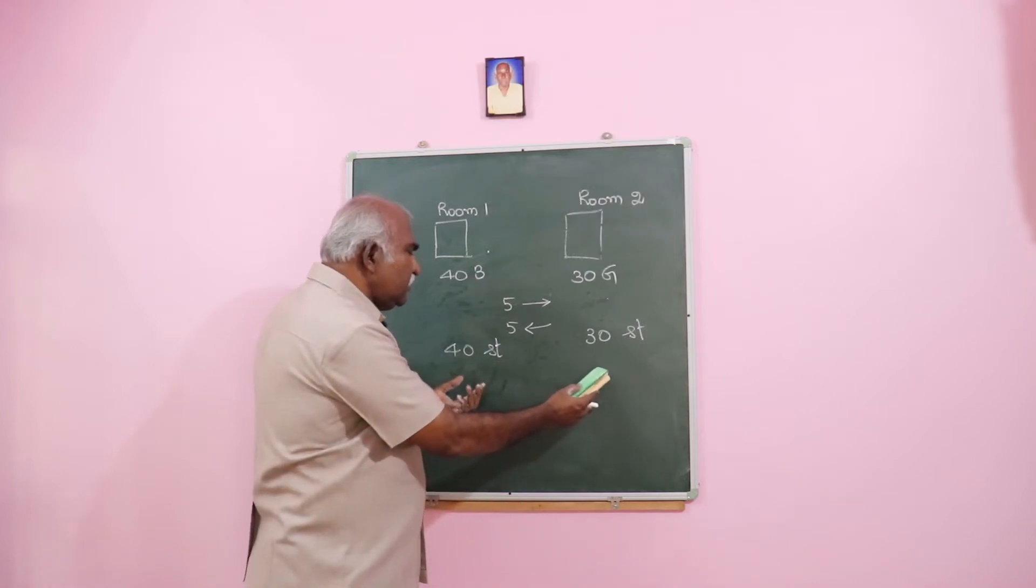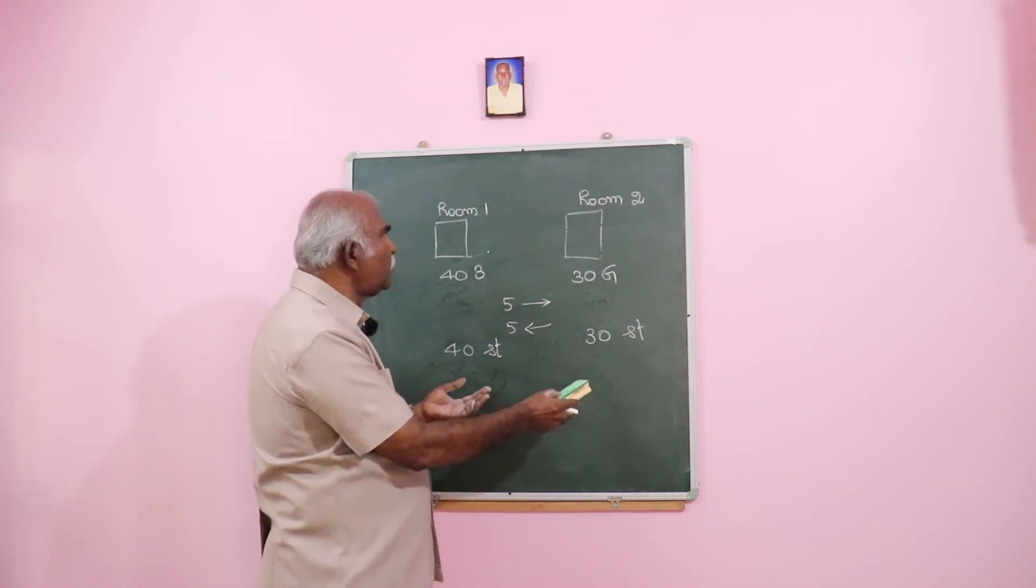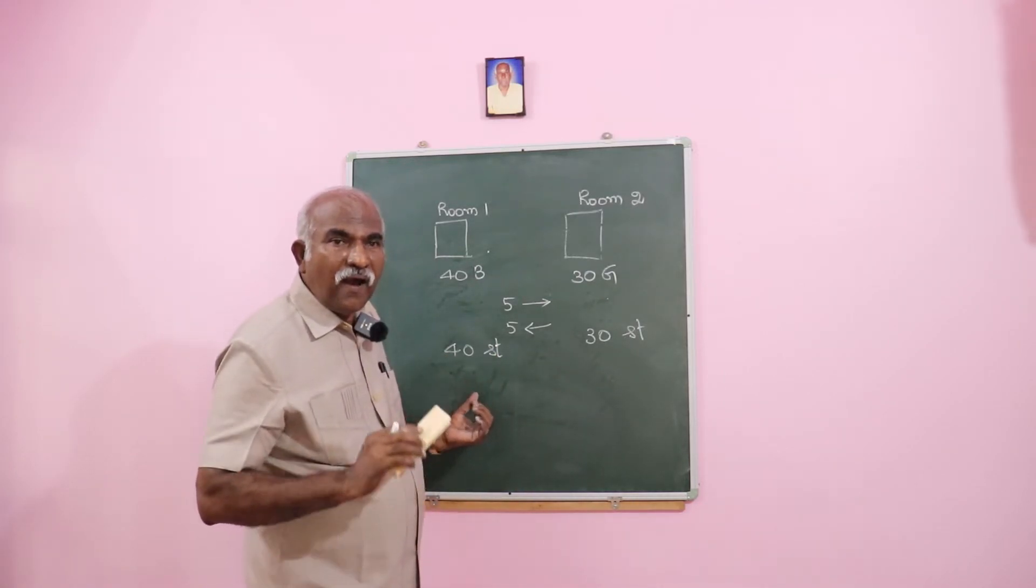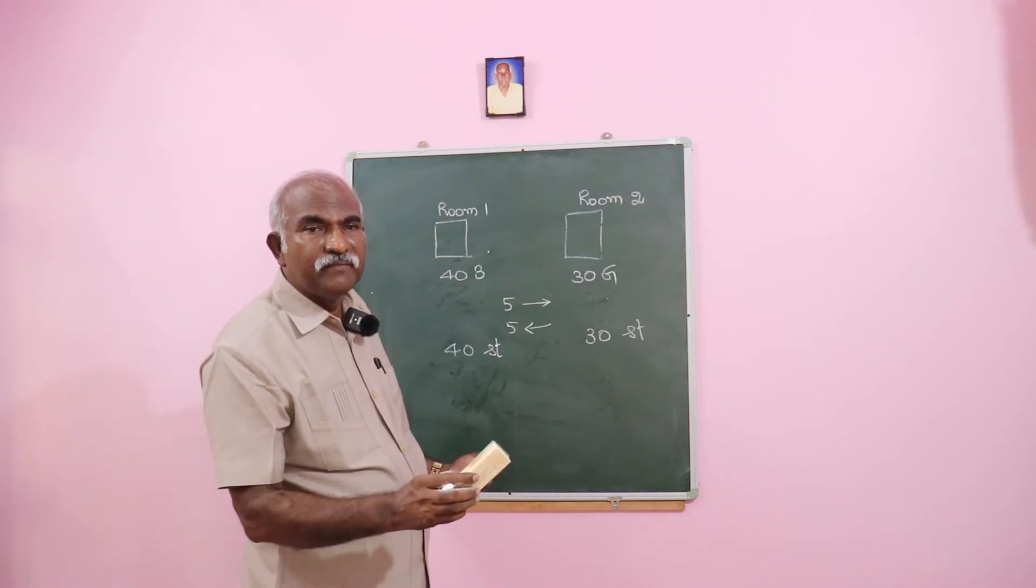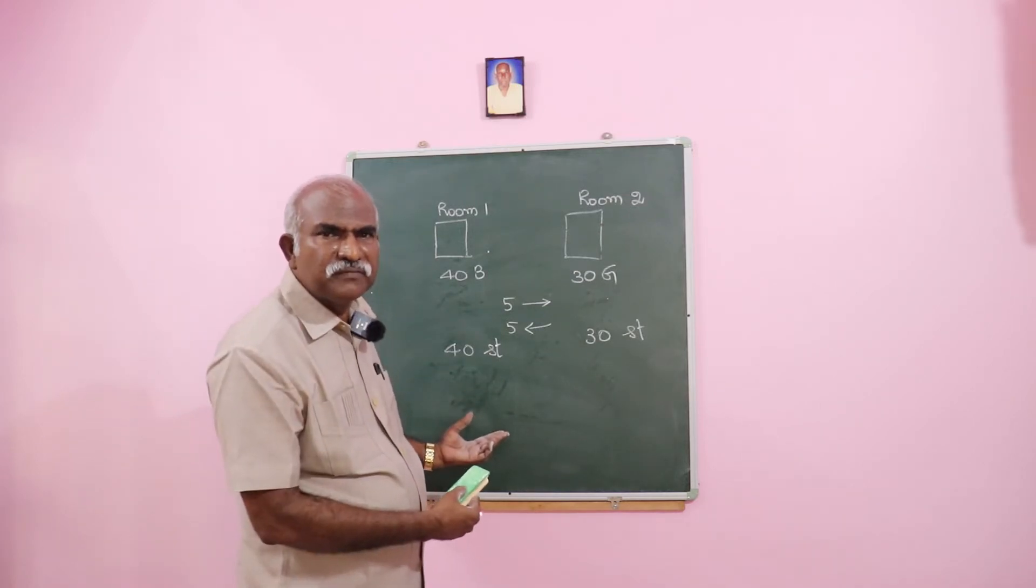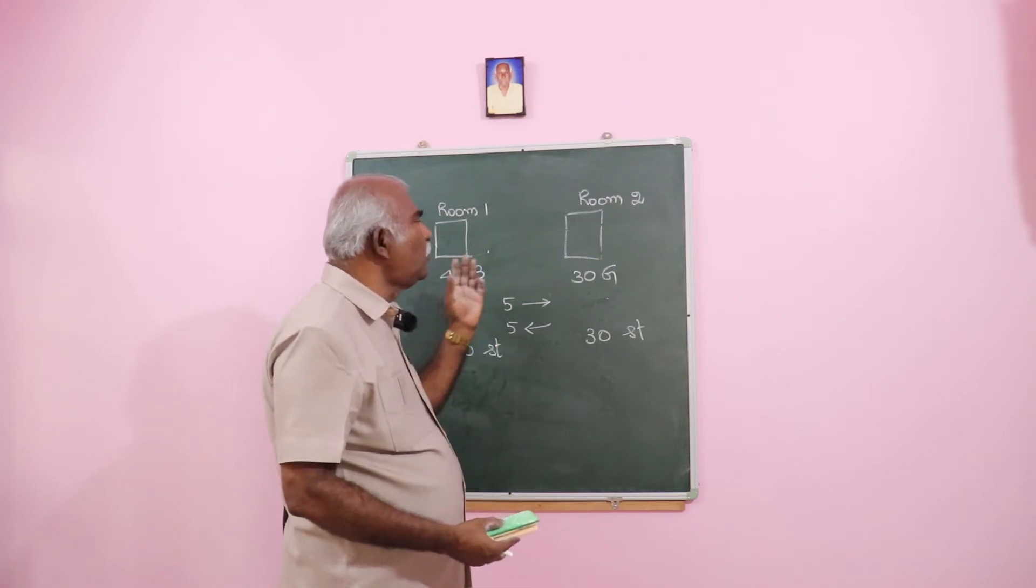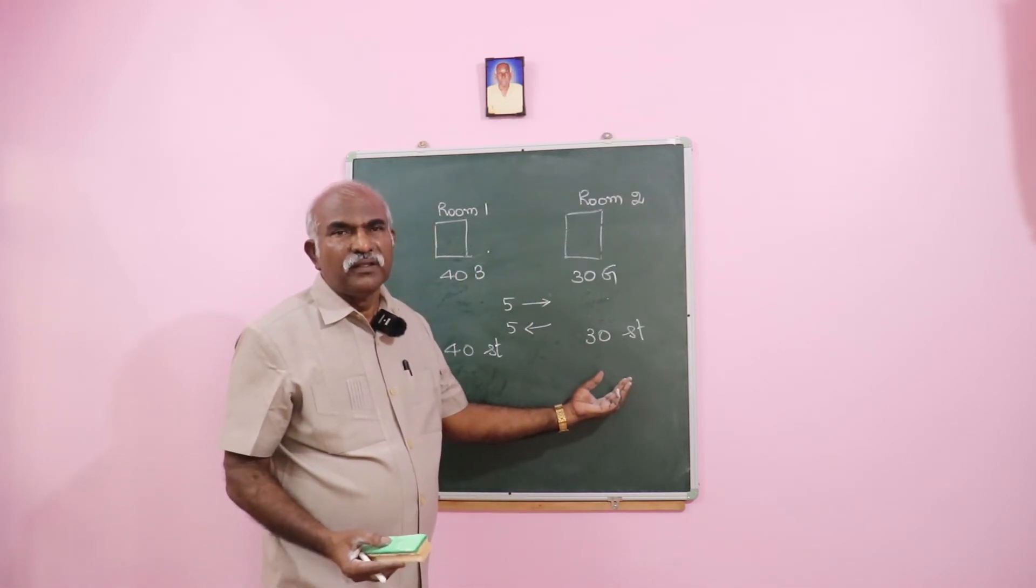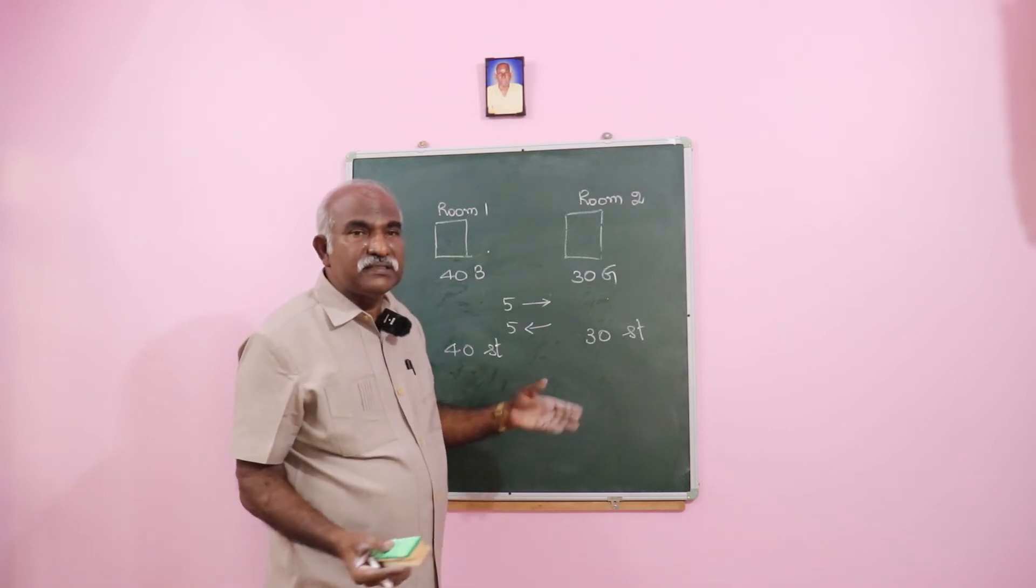Therefore, those girls who have come from room two to room one are replaced by whom? Boys. So they are replaced by boys from room one to room two. Then only the strength will remain the same.